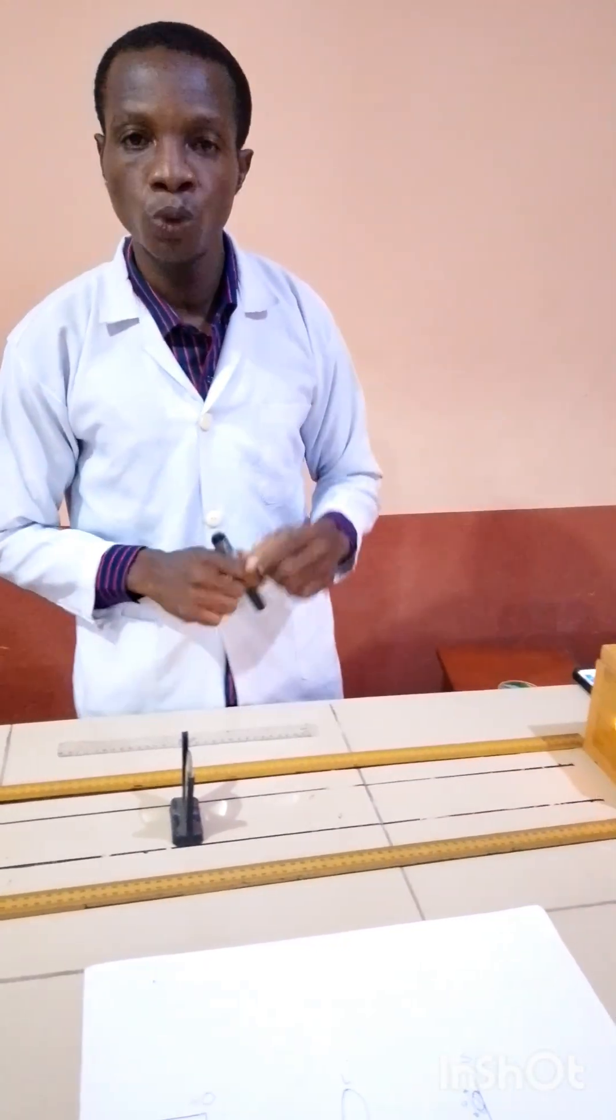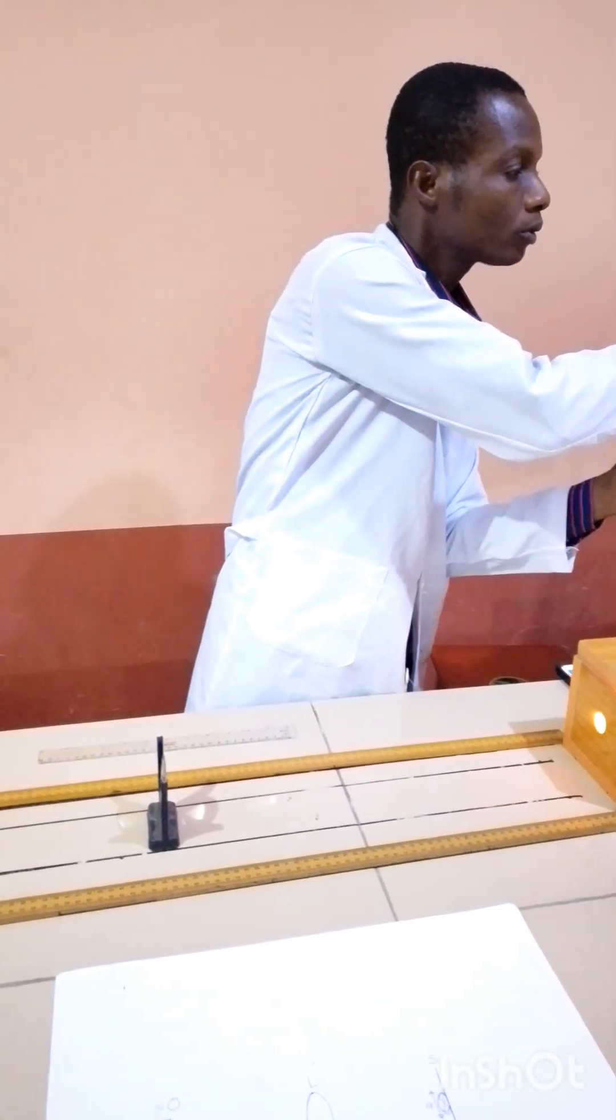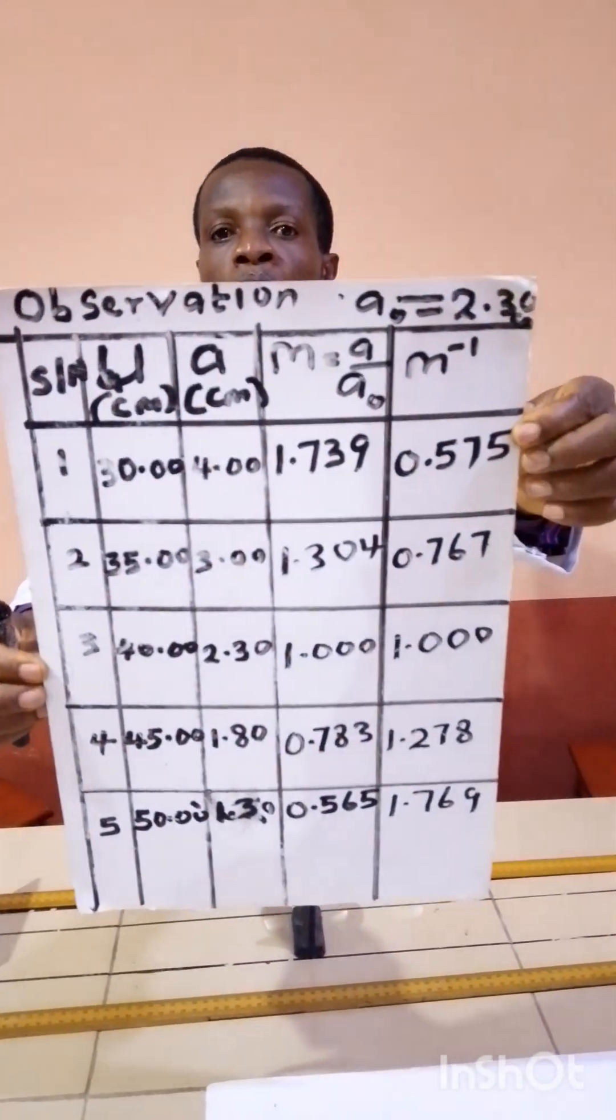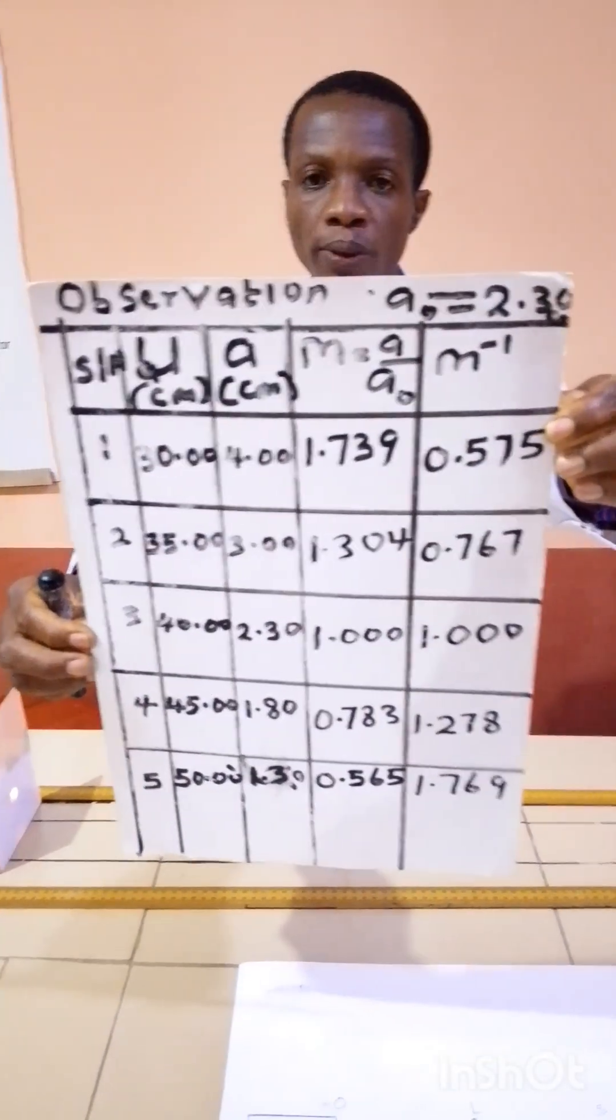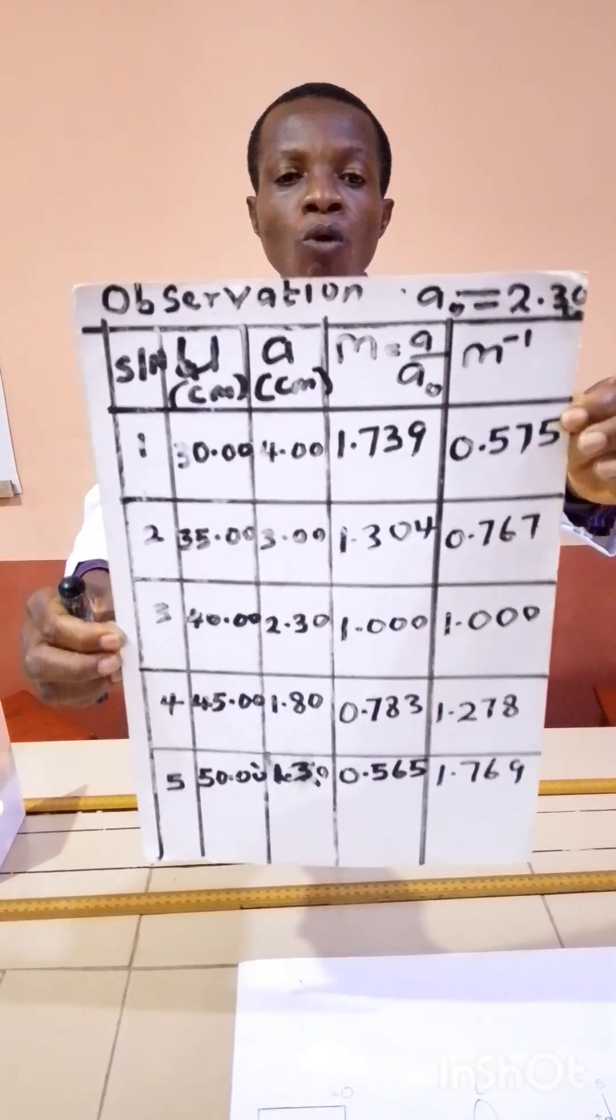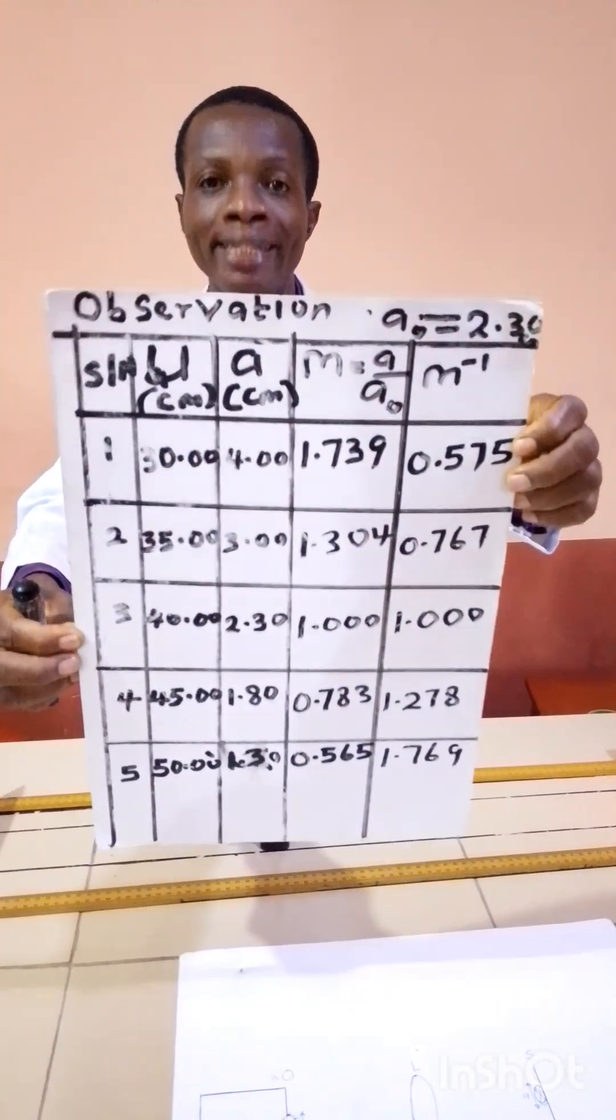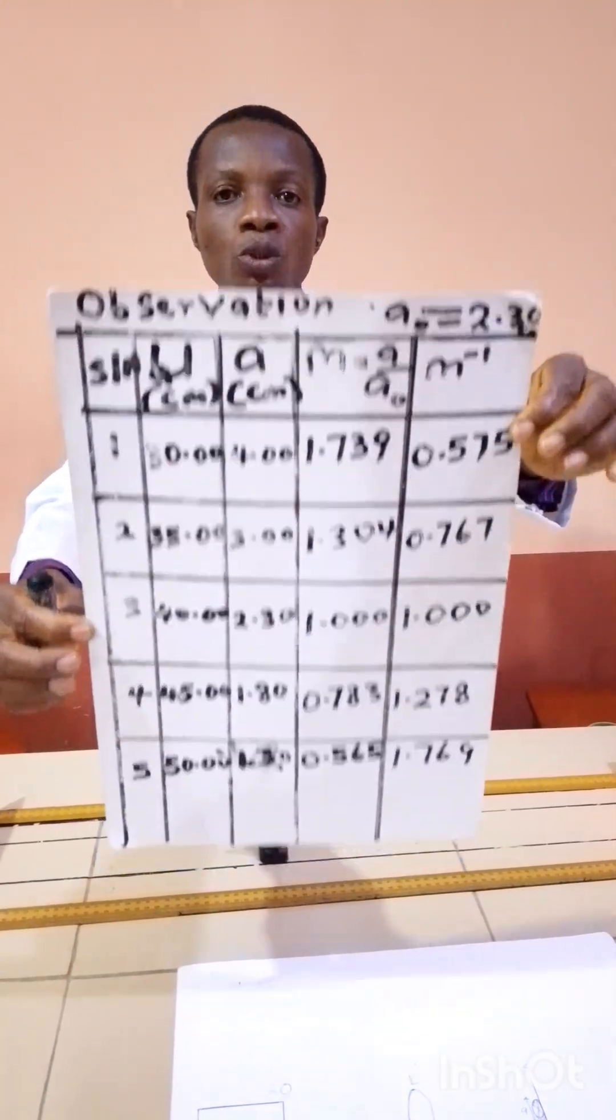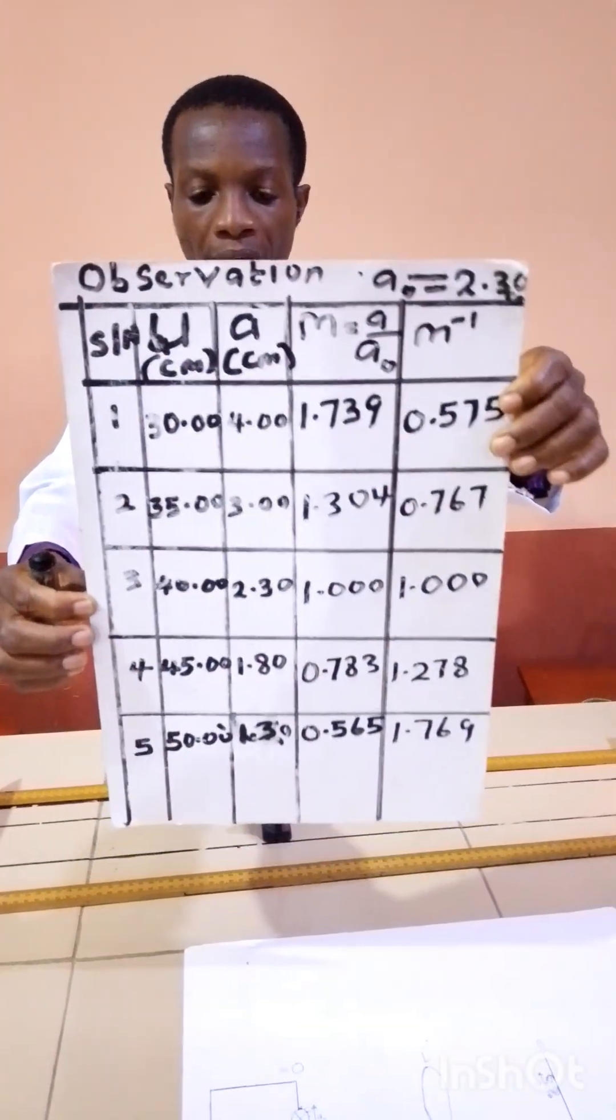Now, the readings is ready. The person who has taken the readings has done all the calculations. This is the readings. You can see it there. We have to plot the graph of M inverse against U. You can plot the graph yourself. If you want to learn how to plot this graph, watch my video on how to plot your graph in 4 minutes. I made a video on how to plot your graph in 4 minutes. So, watch that video. I can assure you, you will be able to plot your graph very quickly. Thank you for watching.